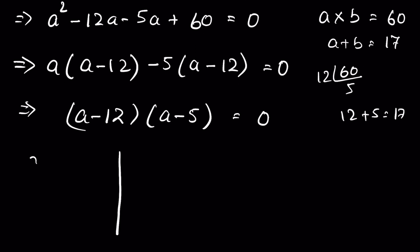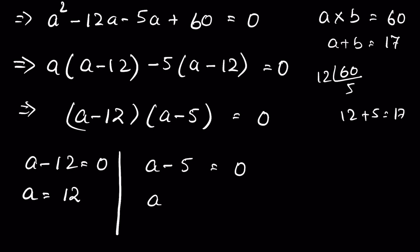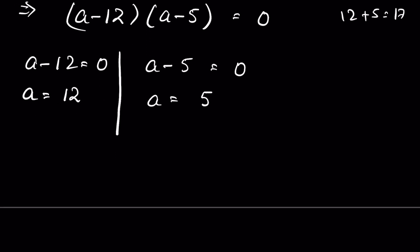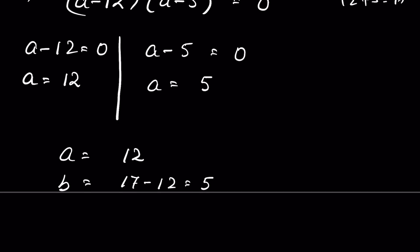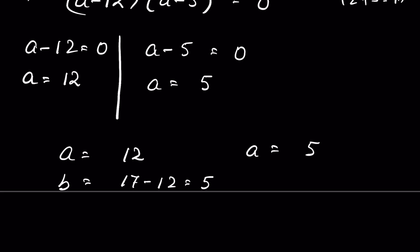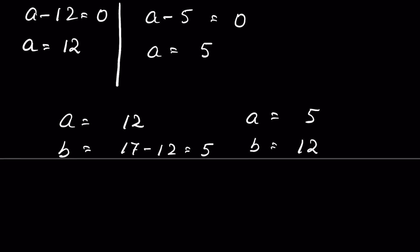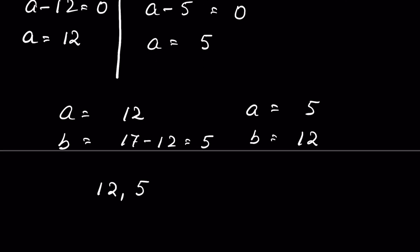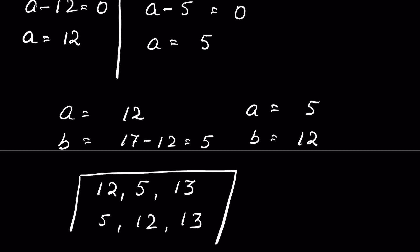We have two solutions: when a minus 12 equals 0, a equals 12; and when a minus 5 equals 0, a equals 5. When a equals 12, b equals 17 minus 12, which is 5. When a equals 5, b equals 12. So either (12, 5, 13) or (5, 12, 13) are the sides of the triangle. Let me know how you solved it in the comment section — thanks for watching.